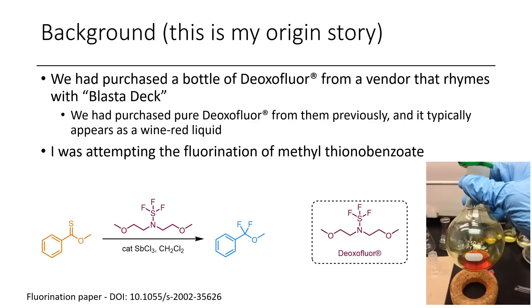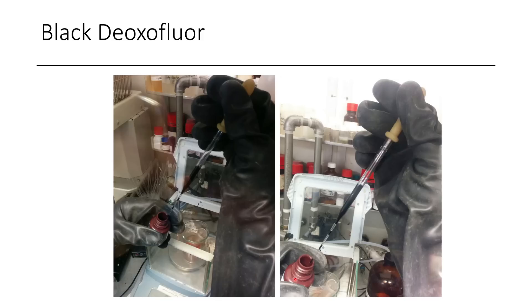This is a picture of methyl thionobenzoate on the right. It's a beautiful orange colored compound — actually yellow if it's completely pure, but most of the time when I made it, it was orange. If you want to see the fluorination paper where they first reported this, you can get that here.